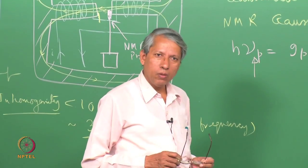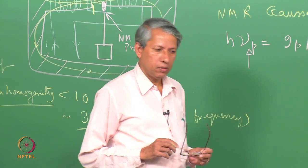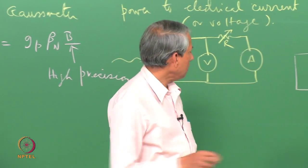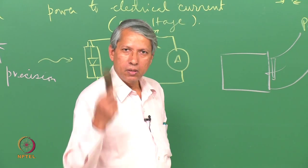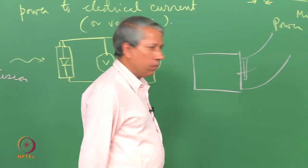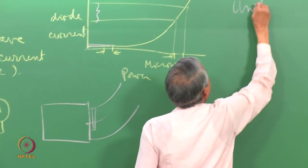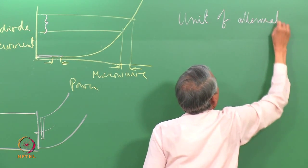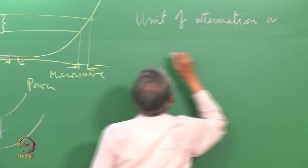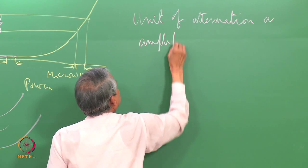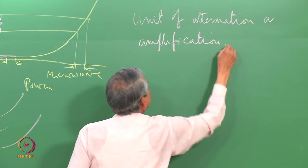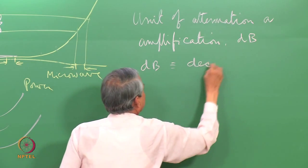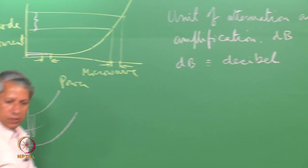Before I conclude, I would like to introduce a unit of measuring the various characteristics of these microwave components and microwave power. This unit is called the unit of attenuation or amplification, which is called dB. dB stands for decibel.